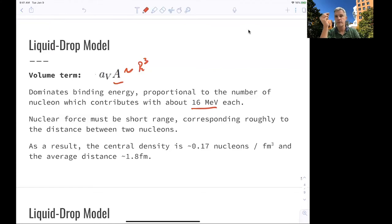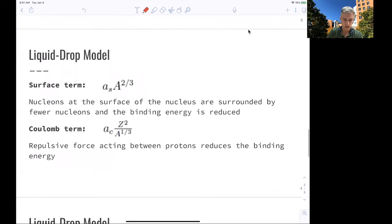If any given nuclei would be able to see everybody else, you would see a term quadratic in the number of nuclei available. As a result of this, you can calculate a central density which is about 0.17 nucleons per cubic femtometer, or an average distance between protons and neutrons of 1.8 femtometers. So they are really tightly packed. The size of a proton is about a femtometer.